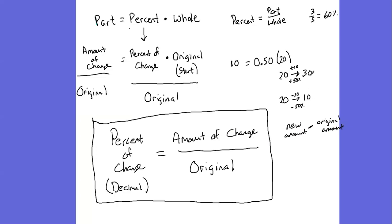So with the example I came up with a little bit ago here, my new amount was 30, my original amount was 20. And if I subtract those two things, 30 minus 20 would be 10. I'm going up 10. That's my amount of change.